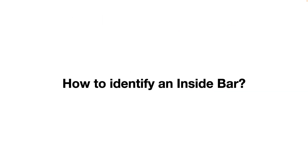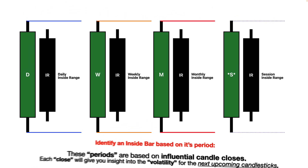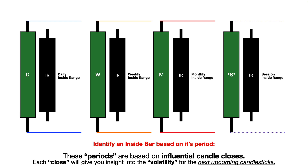How do you identify an inside bar? You identify an inside bar based on its period. The fractal that makes an inside bar range is the next candle closing within the previous open, high, low, and close. You can see that this candle is stuck within the previous range — that's an inside bar. These periods are based on influential candle closes, each giving you insight into the volatility for the next upcoming candlesticks.